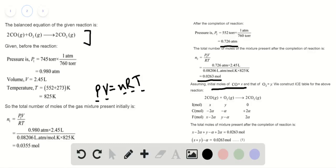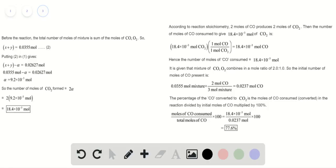We can assume the initial moles of carbon monoxide as x and that of oxygen as y. Before the reaction, the total number of moles of mixture is the sum of moles of carbon monoxide along with oxygen. The sum turns out to be 0.0355 moles.